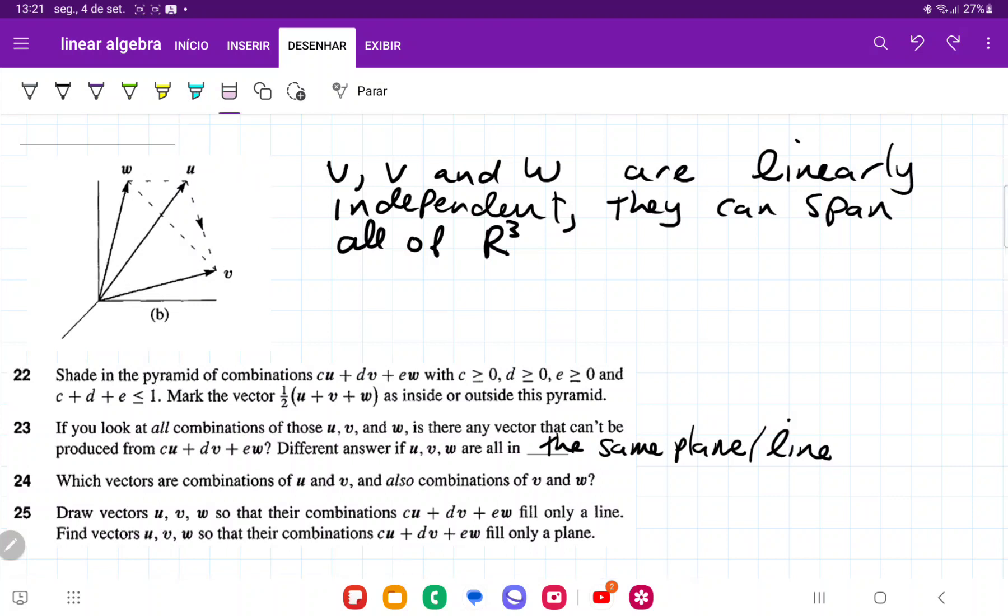So say that this here would be v, and maybe w would be here, but w would point the other direction, right? If they were all collinear, then they would only be able to access R1. So, definitely different if they were all coplanar or collinear. And that is it for item 23.